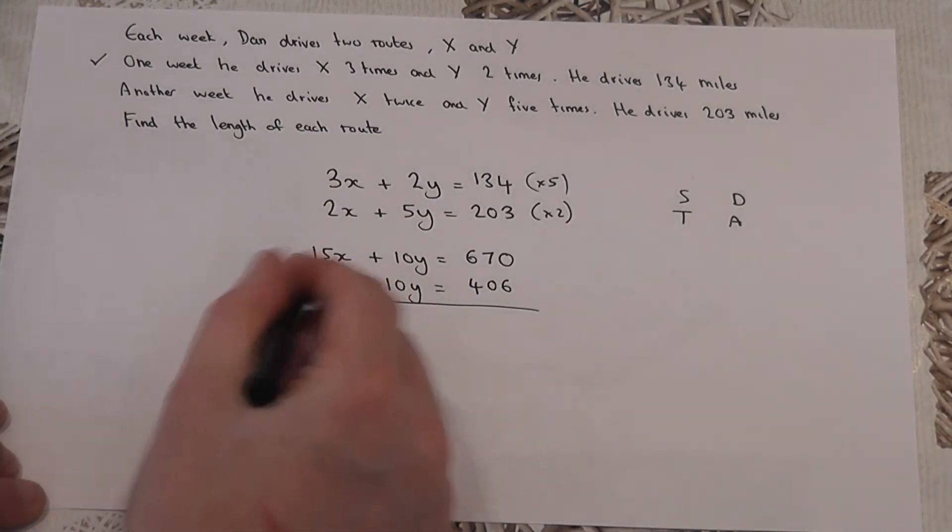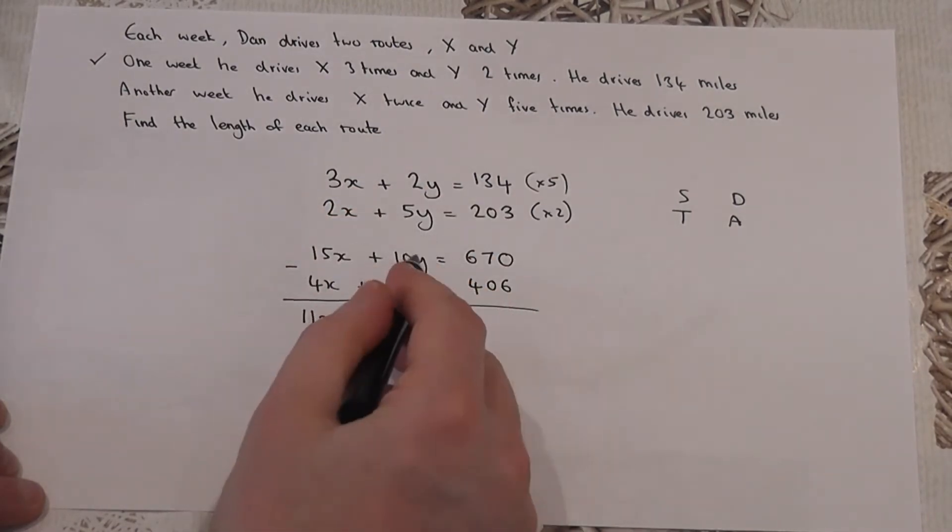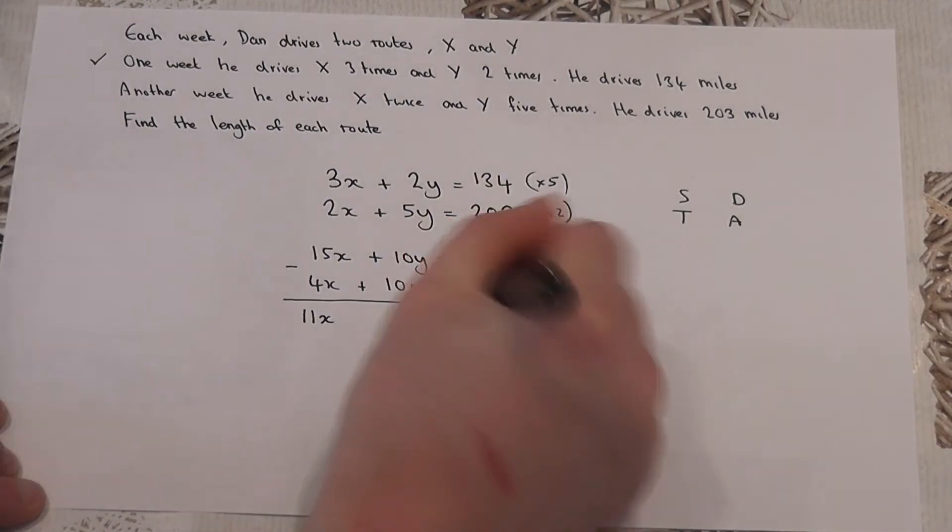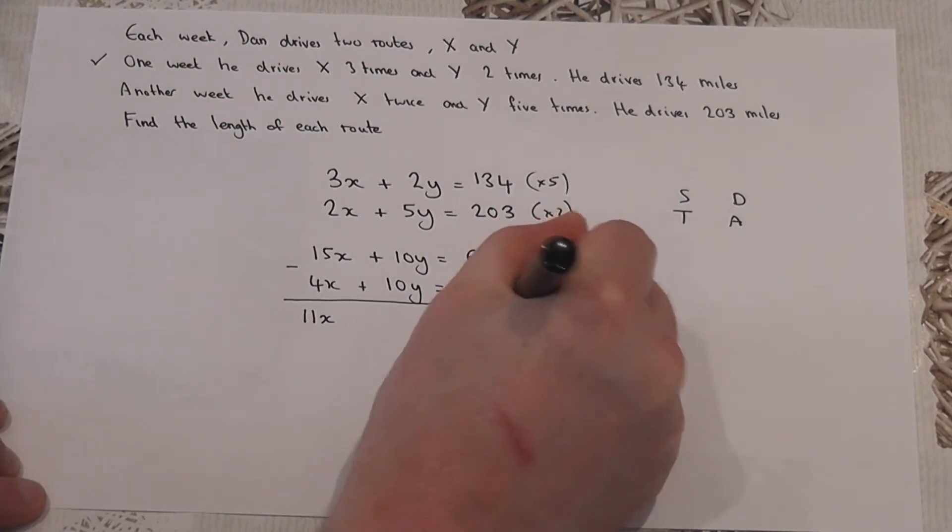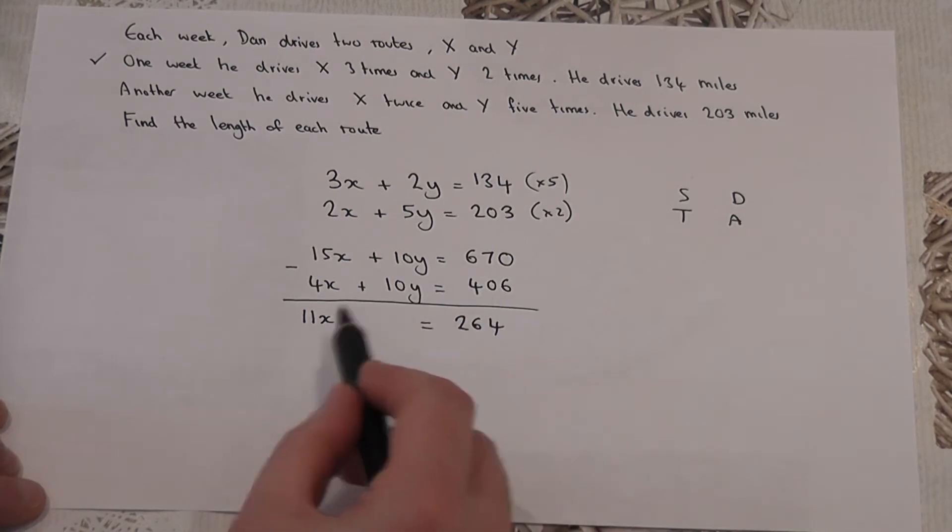Because 15x take away 4x is 11x. But 10y, take away 10y, cancels off and leaves zero. And 670 take away 406 is 264. So, we have eliminated one of the variables to make a nice equation to solve for one of the variables.